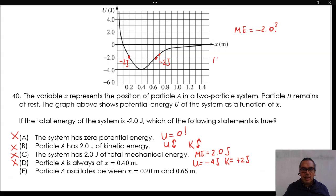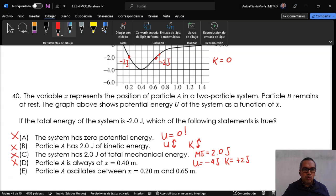Particle A cannot go to the left of 0.20 nor to the right of 0.65 meters. However, at any position in between, it has some kinetic energy, so it is moving back and forth between those two positions.